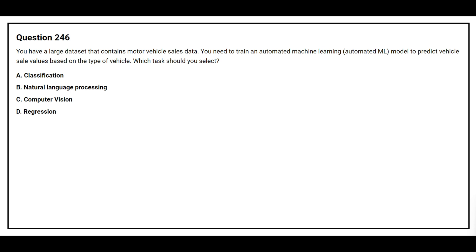Question number 246. You have a large dataset that contains motor vehicle sales data. You need to train an automated machine learning model to predict vehicle sales values based on the type of vehicle. Which task should you select? Option A: Classification. Option B: Natural Language Processing. Option C: Computer Vision. Option D: Regression. The correct answer is option D, Regression.